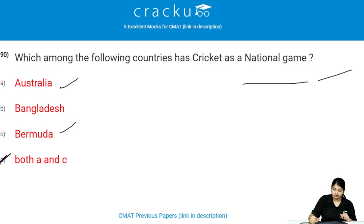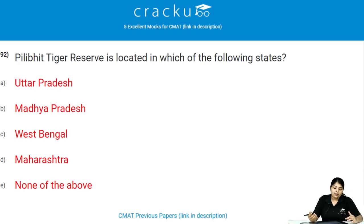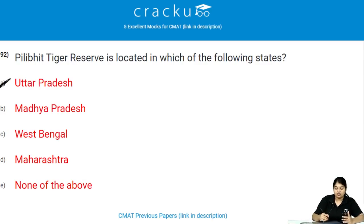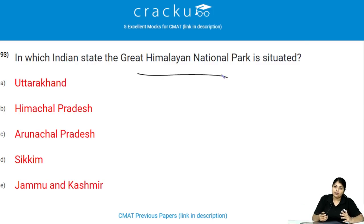Amrit Diwan Cup and Narang Cup are associated with badminton sport. Pilibhit Tiger Reserve is located in Uttar Pradesh state of India; it was added to the World Heritage list in the year 2014. The Great Himalayan National Park is situated in Himachal Pradesh state of India.